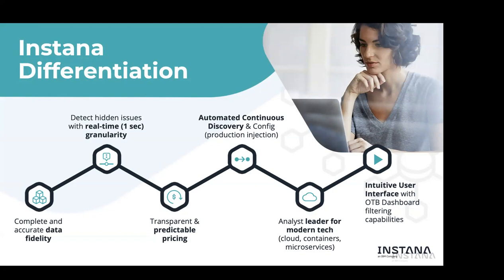When you combine automation, context, and intelligent actions as the way you deal with metrics, traces, and logs, you create an observability platform usable by teams of one or two all the way up to massive enterprise environments. Instana's real differentiator starts with data fidelity: one-second granularity on 99%+ of all metrics. This means you'll never miss any problem no matter how small. We also take a trace of every single request — full end-to-end, no sampling, all the time.